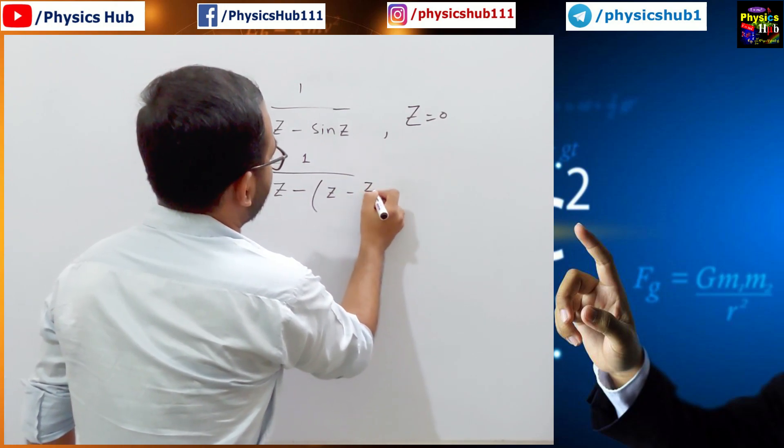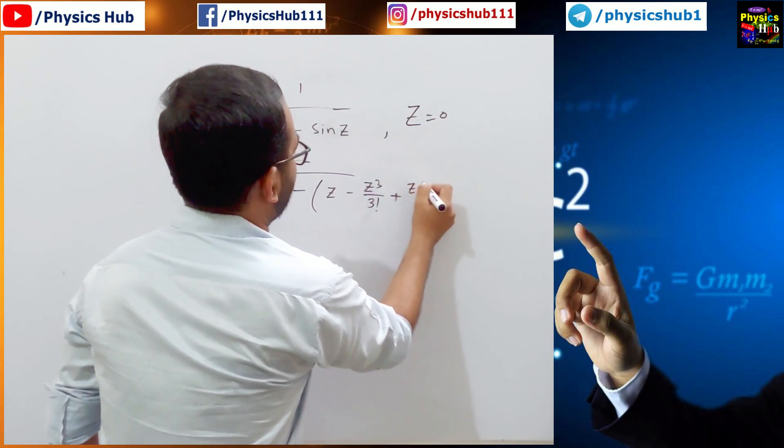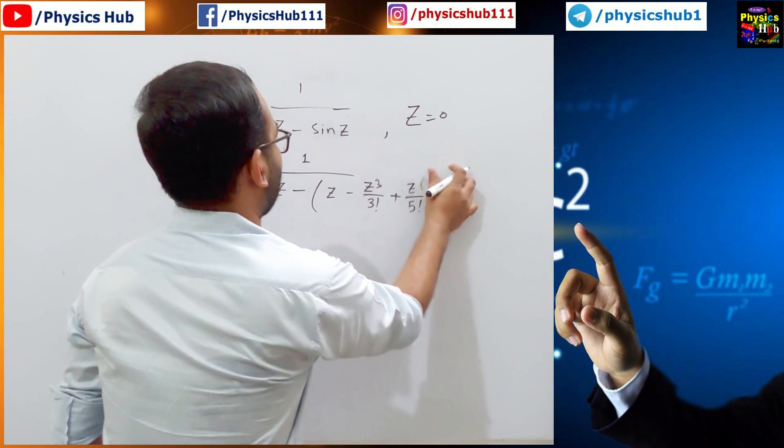Sin z can be written as z minus z cubed divided by 3 factorial plus z to the power 5 by 5 factorial and so on.